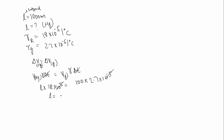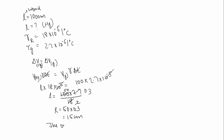Length equals 100 × 2.7 divided by 18, which simplifies to 50 × 0.3, giving 15 cm. So the length of mercury is 15 cm, and the answer is option 2.